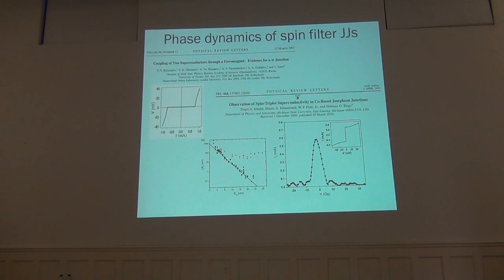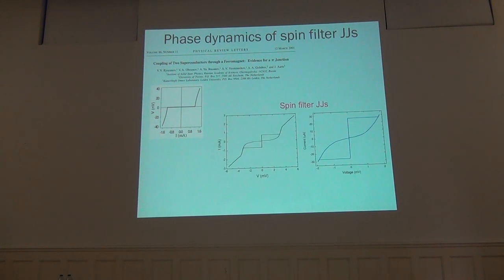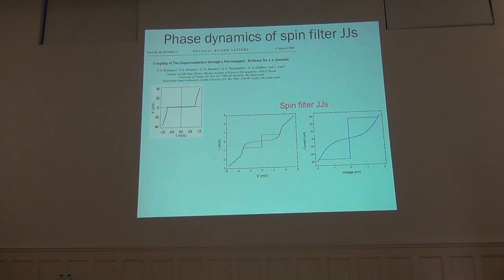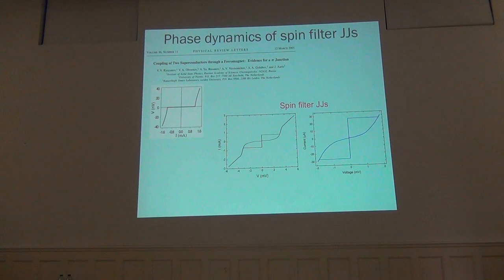Usually ferromagnetic Josephson junctions are composed by metallic layers, and therefore the IVCs found in literature are non-hysteretic, with low values of the ICRN product of the order of few microvolts, and the junctions fall in the overdamped regime. On the other hand, due to the insulating nature of the barrier in spin-filter junctions, the current-voltage characteristics are hysteretic with hysteresis larger than 90%. The ICRN product is quite high, on the order of few millivolts, and the junctions fall in the underdamped regime.